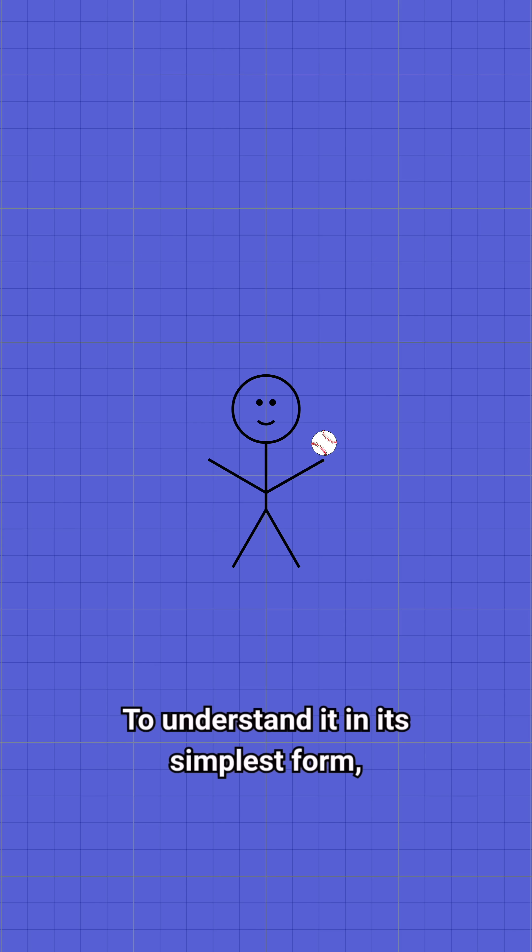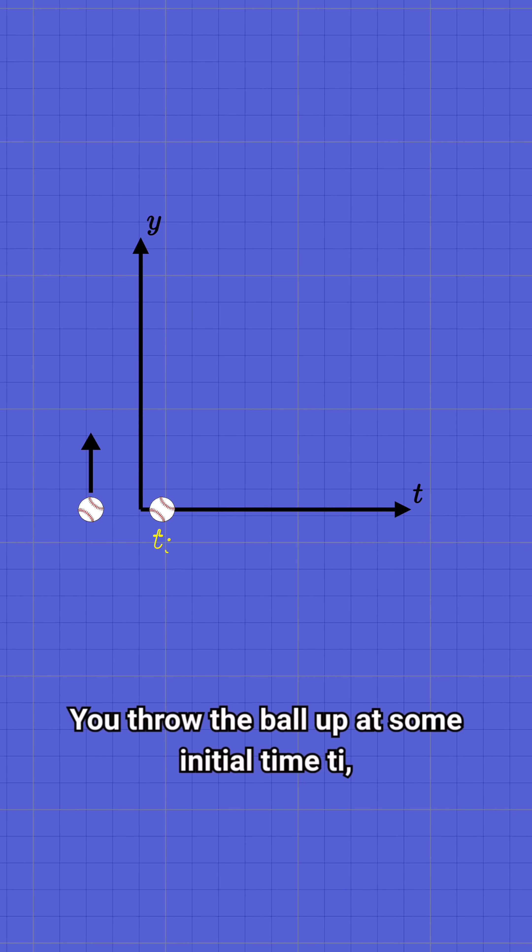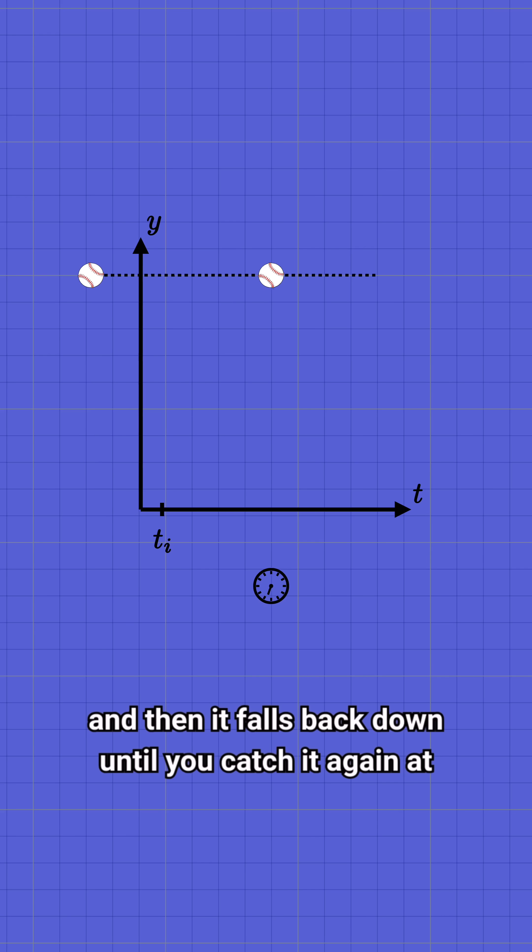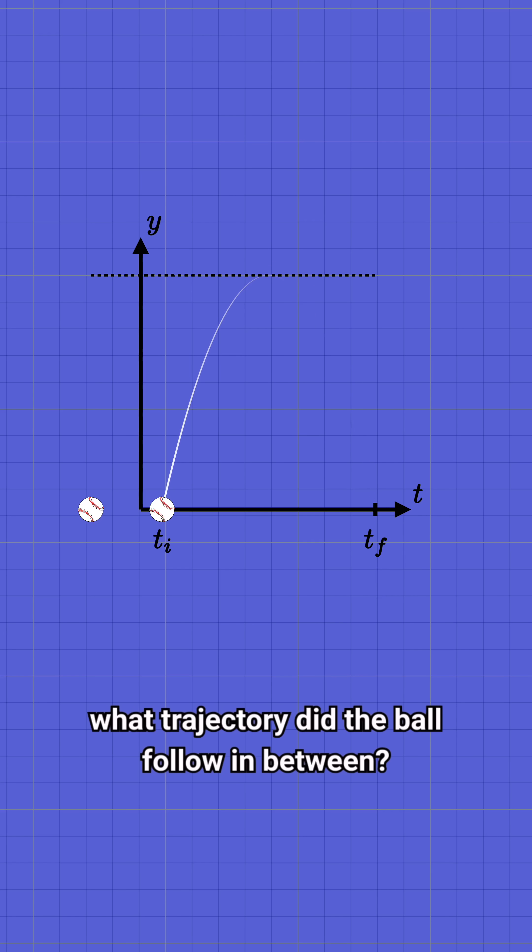To understand it in its simplest form, imagine tossing a baseball up in the air. You throw the ball up at some initial time ti, it rises up to its peak, and then it falls back down until you catch it again at some final time tf. The question is, what trajectory did the ball follow in between?